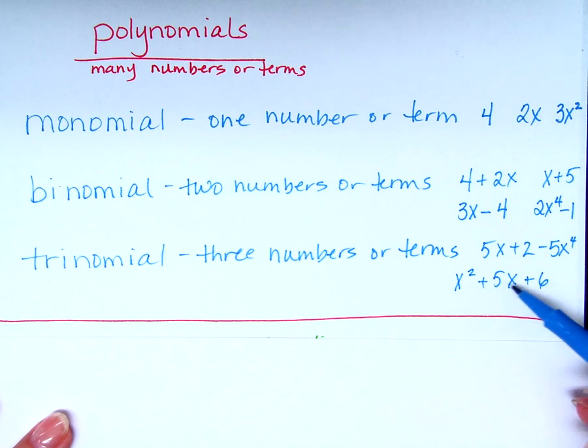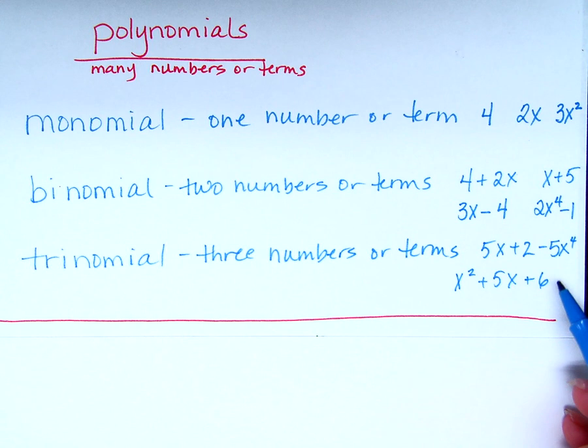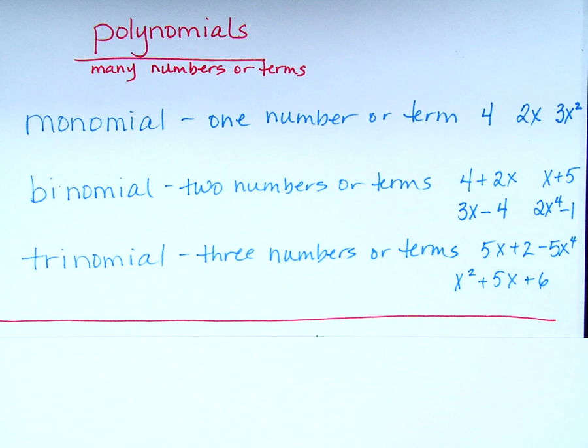Now here's the difference. This second trinomial is in standard form, but this first one is not. Can you tell me what that means? It does have something to do with the variables, specifically the exponents. What's this exponent? Two, and this one? One. Exactly right. It's decreasing order of exponents. That's what it means to be in standard form.